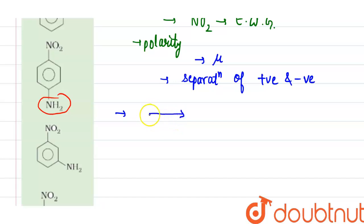The dipole moment arrow has the arrowhead on the negative center and a cross on the positive center. This arrow symbolizes the shift of electron density in the molecule. Now in the question we are given nitrobenzene and aniline derivatives, so we will find the dipole moment of the following compounds.